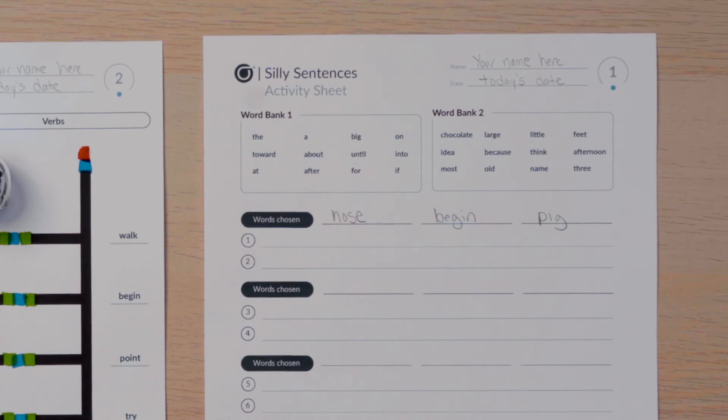Also, you can use whatever form of the verb necessary so that your sentence makes sense. For example, if my bot chose eat, I could use eat or ate.